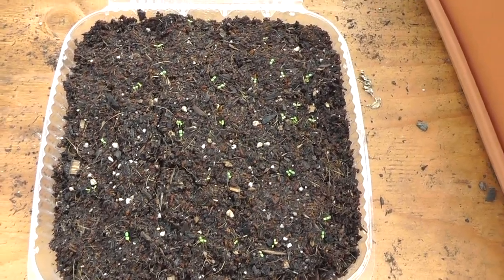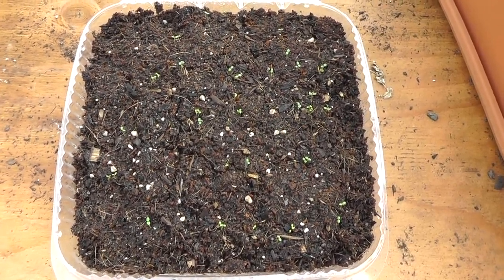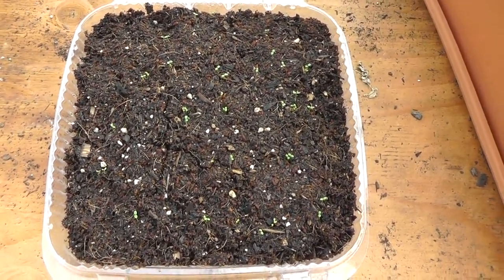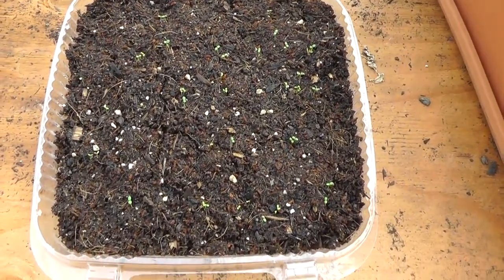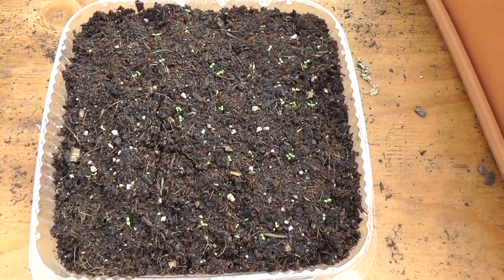When these babies get their second set of leaves, I'm going to pull these out and put them in the garden. I'll keep them in the greenhouse until it's warm enough outside, then probably mid-April I'll put them out in my strawberry bed. There it is - growing strawberries from seeds that you get from a store-bought strawberry. It's possible, there's living proof.